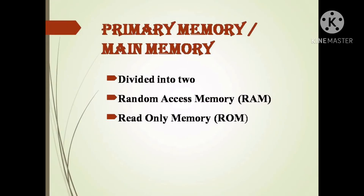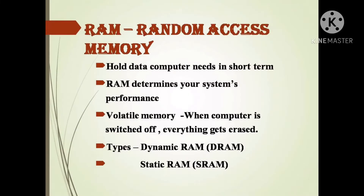Under primary memory, the first type is RAM — Random Access Memory — and the second type is ROM — Read Only Memory. Let's first look at what RAM is.